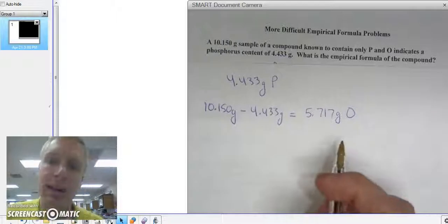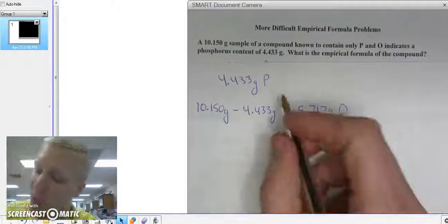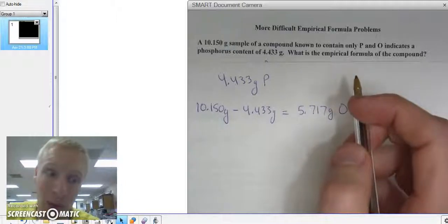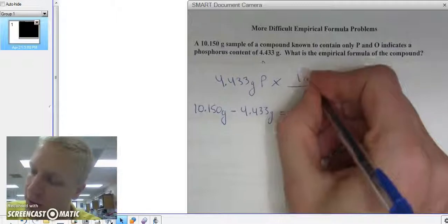This question is asking for finding the empirical formula, which is the lowest whole number mole ratio. So in order to have the lowest whole number mole ratio, I need to be in moles. So I'm going to convert it to moles.